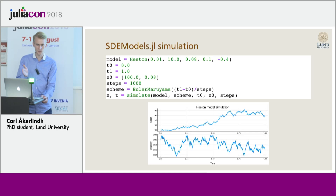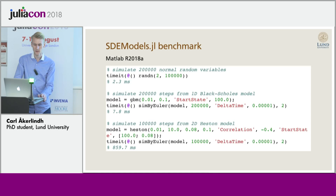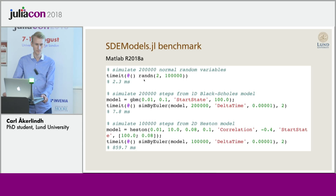Every step in this simulation requires sampling a Gaussian random number. When I benchmark this, I'm going to compare with the equivalent in MATLAB. The baseline timing is the cost of simulating just the random numbers: in MATLAB, simulating 200,000 Gaussian numbers takes roughly two milliseconds. Simulating a simple one-dimensional model is roughly four times slower than that. But when you simulate the two-dimensional Heston model, something breaks down and it's 400 times slower than just the random number generation.